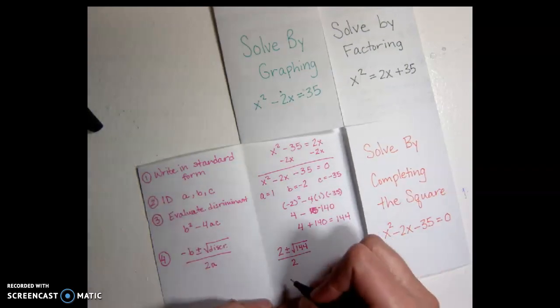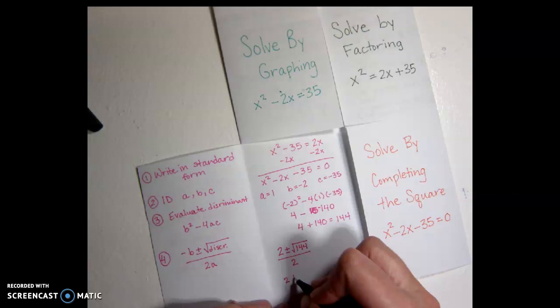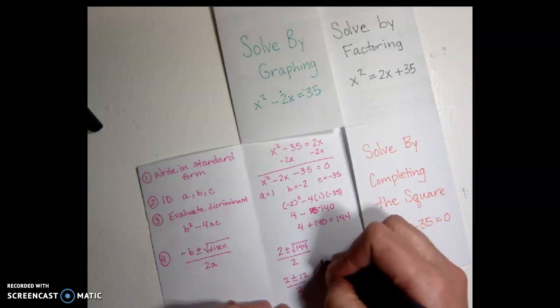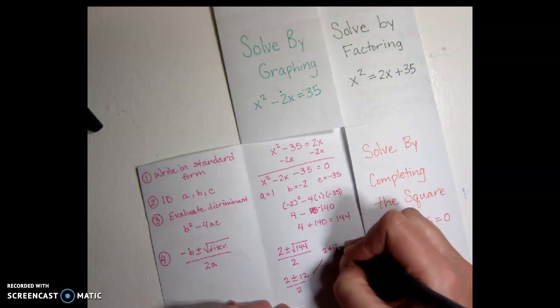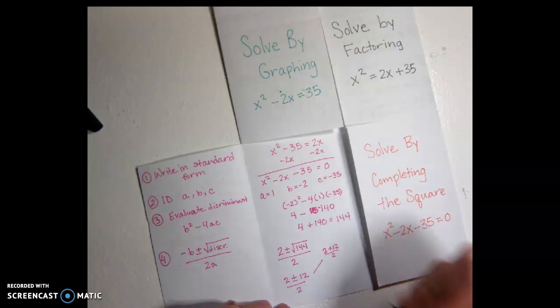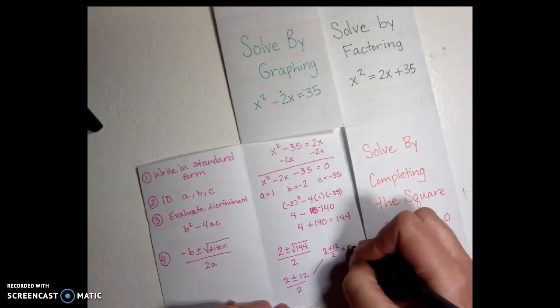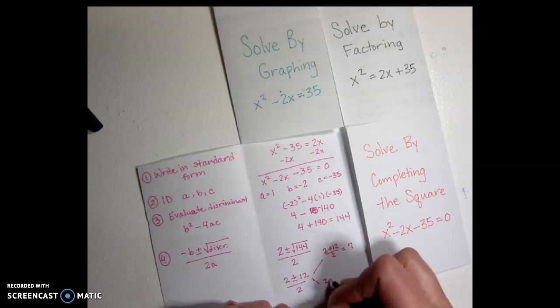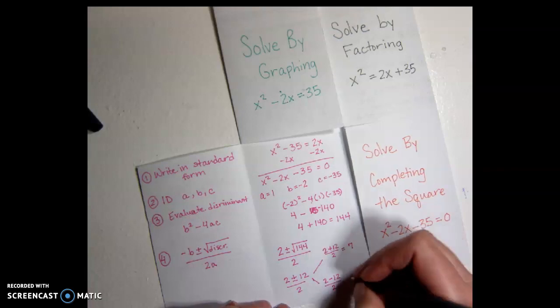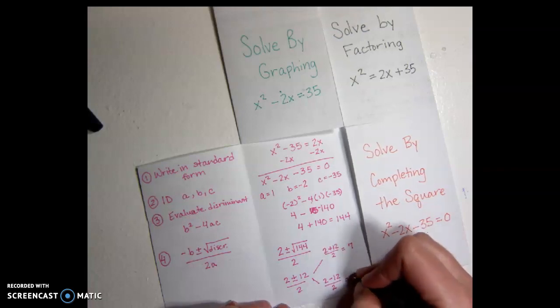The square root of 144 is a nice number, so we have 2 plus or minus 12 over 2. Now we have two possibilities. One possibility is that we have 2 plus 12 divided by 2, that'd be 14 divided by 2, which is 7. And the other possibility is 2 minus 12 divided by 2, so that'd be negative 10 divided by 2, or negative 5.